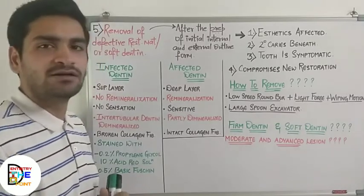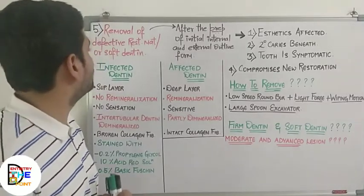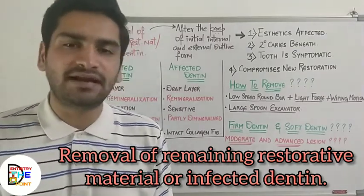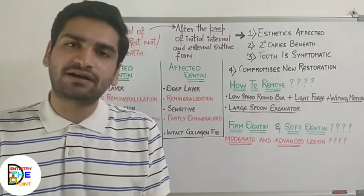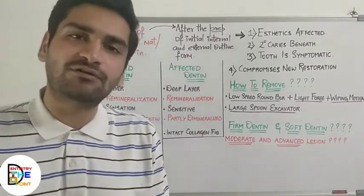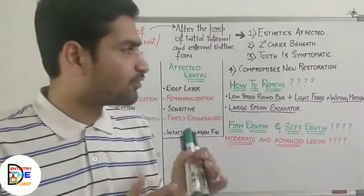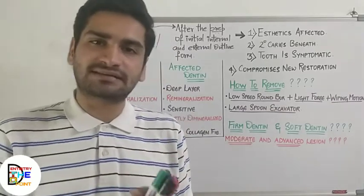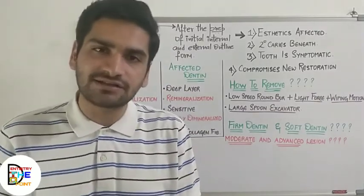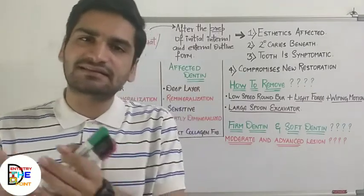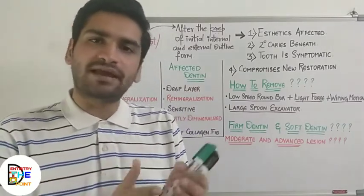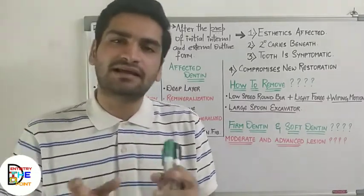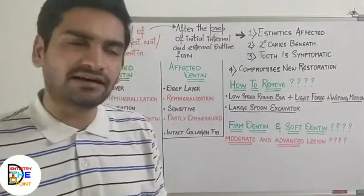The first of the final stages is removal of defective restorative material, or soft or infected dentine. If there is any infected or soft dentine, or any previous restorative material in the cavity, you are going to remove that — that is the 5th stage. The 6th stage is pulp protection, 7th is secondary resistance and retention form, 8th is finishing of external and internal walls, and lastly, 9th is cleaning, inspecting, and sealing.